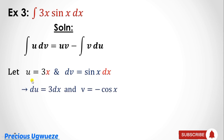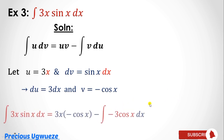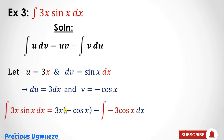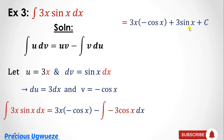Differentiating u = 3x gives du/dx = 3, so du = 3 dx. Integrating sin(x) gives v = −cos(x). Substituting: 3x·(−cos x) − ∫(−cos x)·3 dx. The minus signs combine to give plus 3, leaving ∫cos(x)dx. Integrating cos(x) gives sin(x), so the final answer is −3x·cos(x) + 3·sin(x) + C.